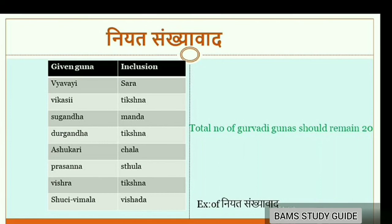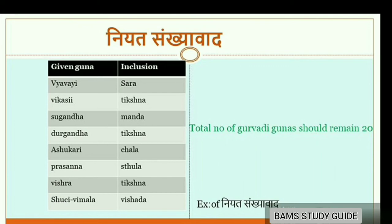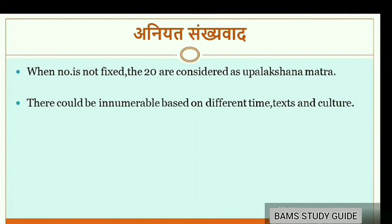According to Niyata Sankhya Vada, the total number of Gurvādi Gunas should remain 20. Therefore, correlations were made: Vyavai with Sara, Vikasi with Tikshna, Sugandha with Mandha, Durgandha with Tikshna, Ashukari with Chala, Prasanna with Sthula, Vishra with Tikshna, and Shuchi or Vimala with Vishada. According to Aniyata Sankhya Vada, there could be innumerable Gunas based on different time, text and culture, and when the number is not fixed, the 20 are considered as Upalakshana Matra.